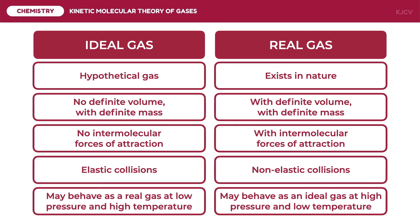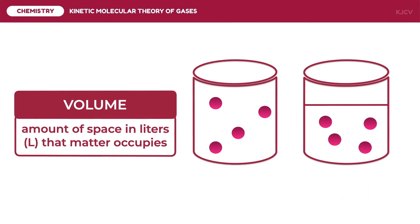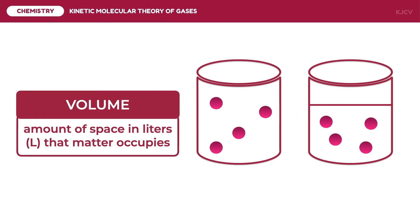After discussing the postulates of the kinetic molecular theory and the differences between ideal and real gases, we can now discuss the macroscopic properties of gases. Volume is the amount of space that the gas particles occupy. It is measured in liters in standard form, especially when analyzing the relationship of volume with other properties of ideal gases. Gases increase their volume as they move from an area of smaller volume to a larger volume — this is called expansion. Gases may also decrease their volume as they move from an area of larger volume to a smaller volume — this is called compression.